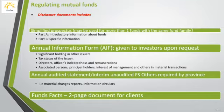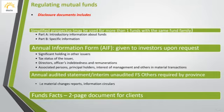The AIF is the Annual Information Form. It is given to investors upon request, and it tells about the significant holdings and other issuers, tax status of the issuer, the directors, officers, indebtedness if the officers have got loans, associated persons, principal holders, interest of management, and others in material transactions.